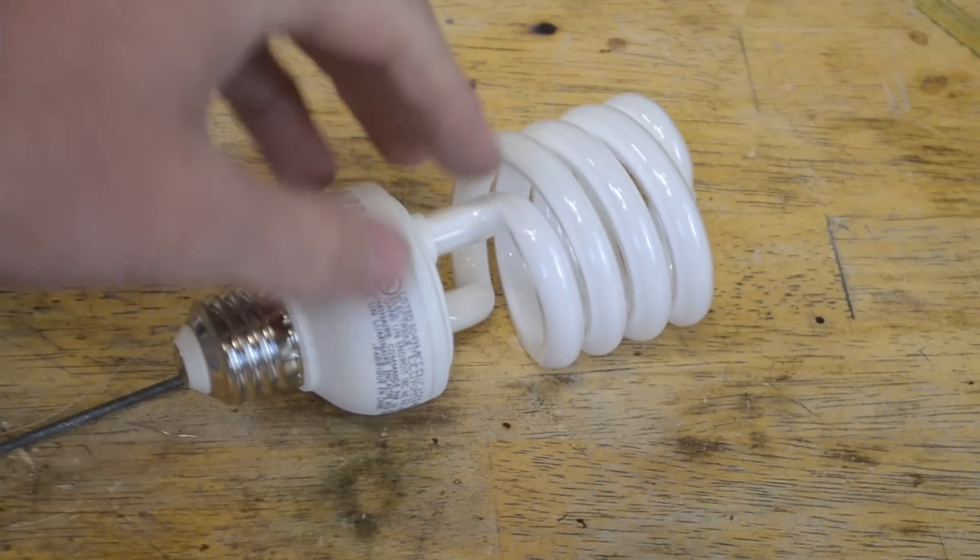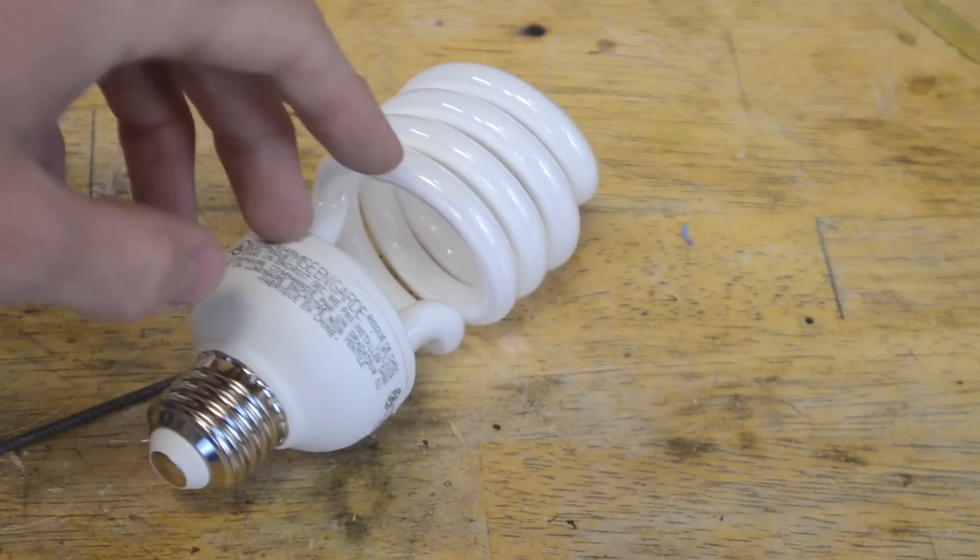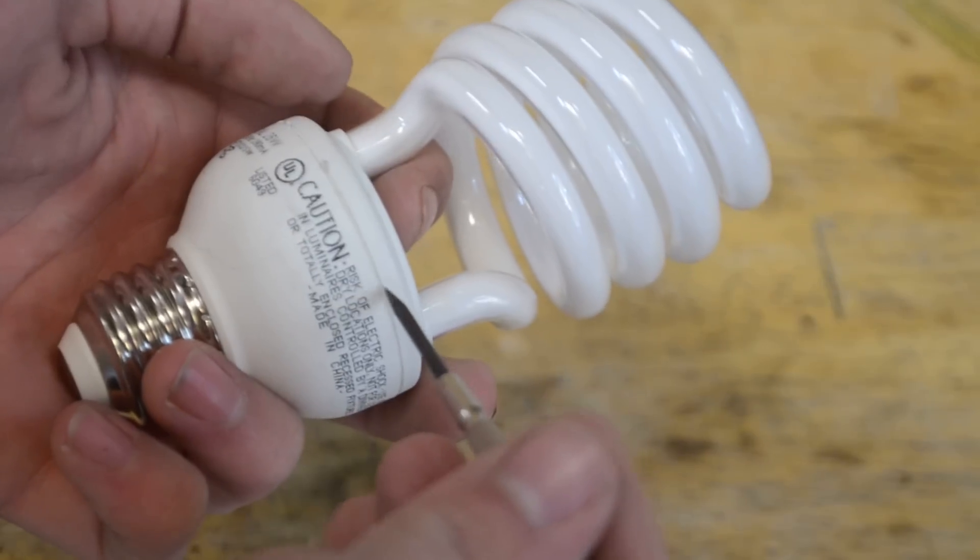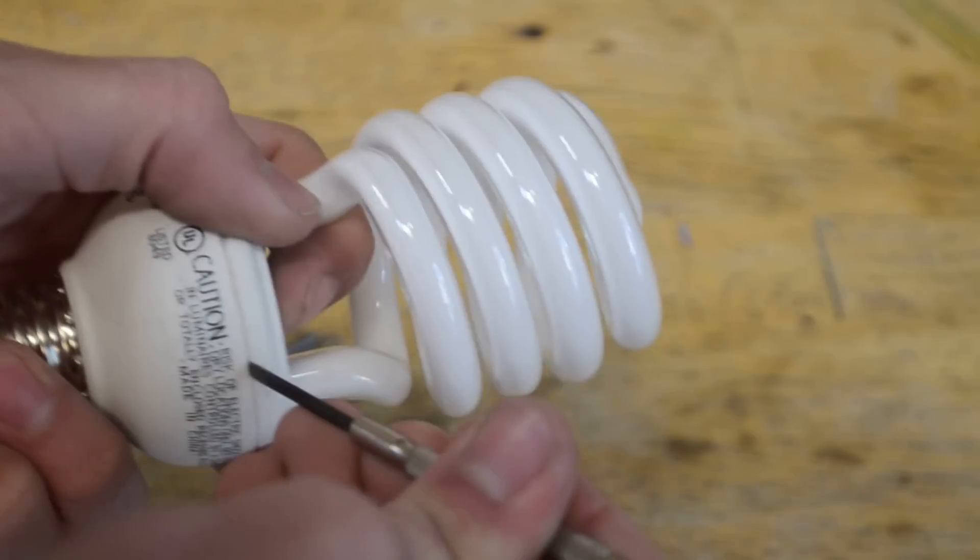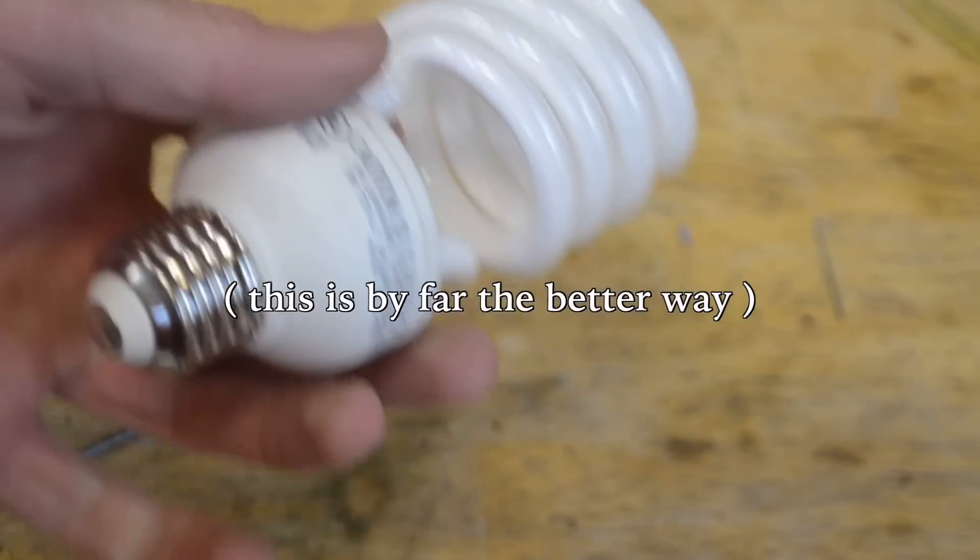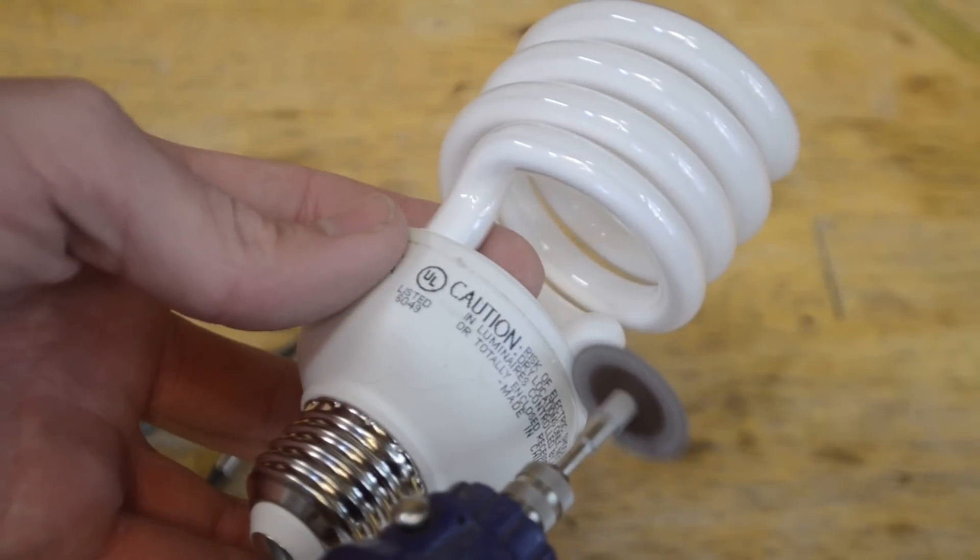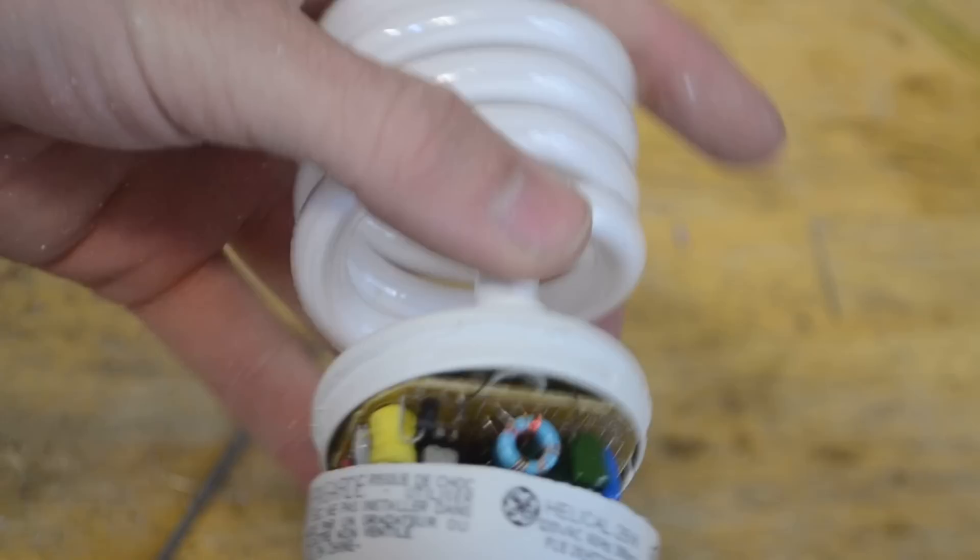So first we're going to want to gain access to the circuit that's inside of this compact fluorescent light bulb. Primarily, there are two ways we can do it. One way is that we can take a screwdriver like this and carefully pry around the crevice line here. This should separate out the two halves and it should just pull apart. If you're a little bit more lazy, however, you can just use a tool like this or a saw and carefully cut along the side here. Once you gain access to it, you should see something inside like this.